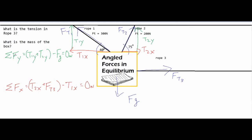I set up my sum of forces in the y direction. Every force directed upwards is positive, so T1y and T2y are both positive. Fg, my only downward force, is negative, and the sum equals zero newtons because acceleration is zero — the entire system is at rest. For the sum of forces in the x direction, everything to the right is positive and everything to the left is negative. T2x and ft3 are positive; T1x, directed to the left, is subtracted. That also equals zero newtons because there is no acceleration and no movement.